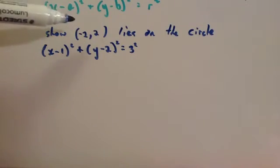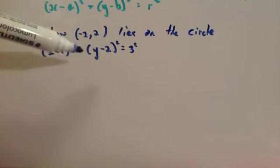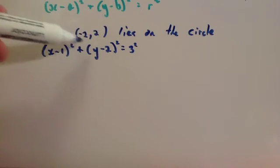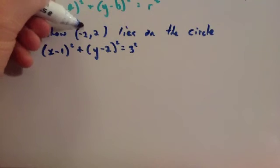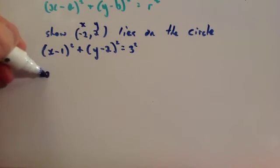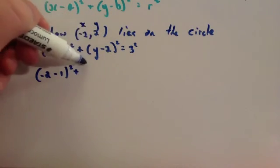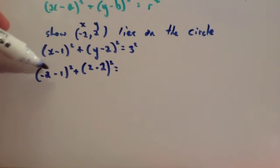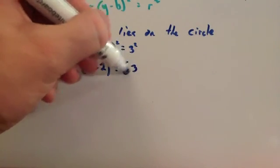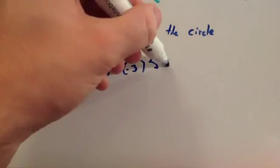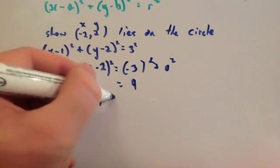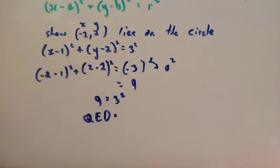Finally, we're asked to show that the coordinate (minus 2, 2) lies on the circle (x minus 1) squared plus (y minus 2) squared equals 3 squared. What you do is substitute the coordinate into the equation and show that it equals 3 squared. Substituting in: x is minus 2, so you get (minus 2 minus 1) squared plus (2 minus 2) squared, which gives (minus 3) squared plus 0 squared, which equals 9. Since 9 equals 3 squared, QED — the point lies on the circle.